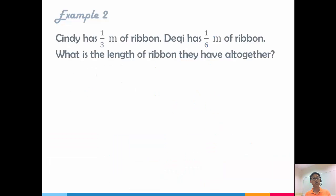Now let's try example 2. Again, if you want to pause, work it out on your own first so that you are able to check whether you are correct. Okay, so now Cindy has half meter of ribbon. So again, what is the whole? So my whole is my ribbon. And Cindy has, sorry, not half, but 1 third meter. So Cindy has 1 third meter of the ribbon.